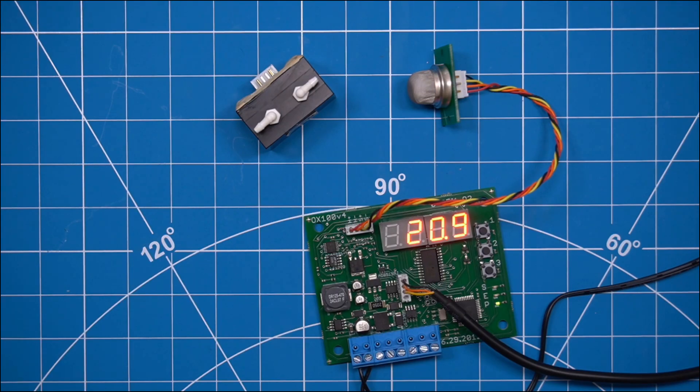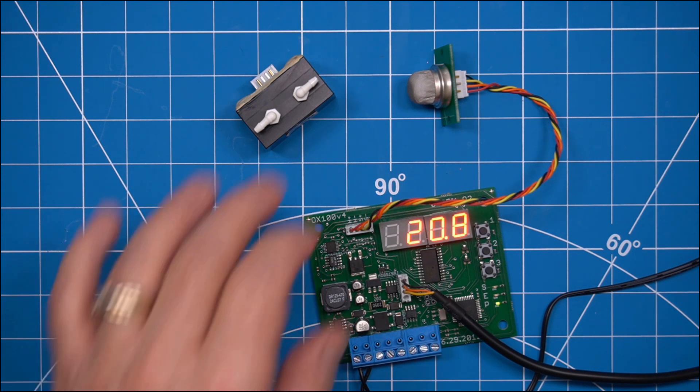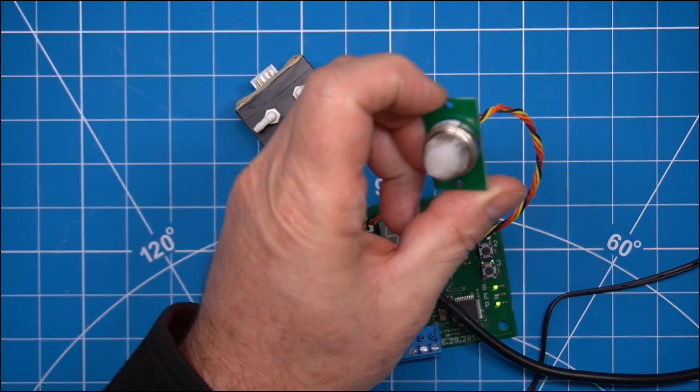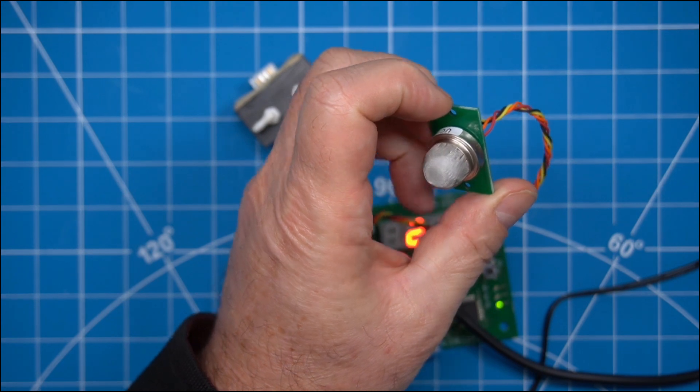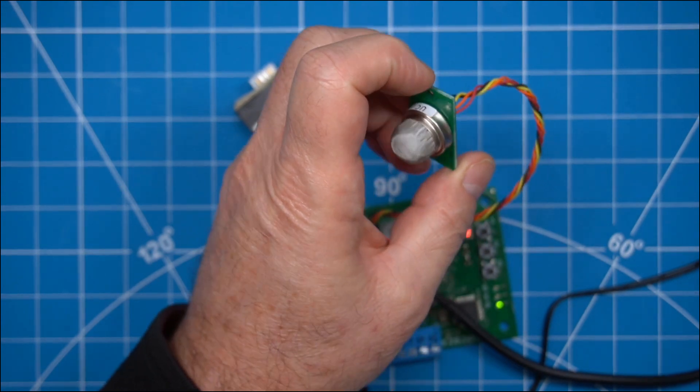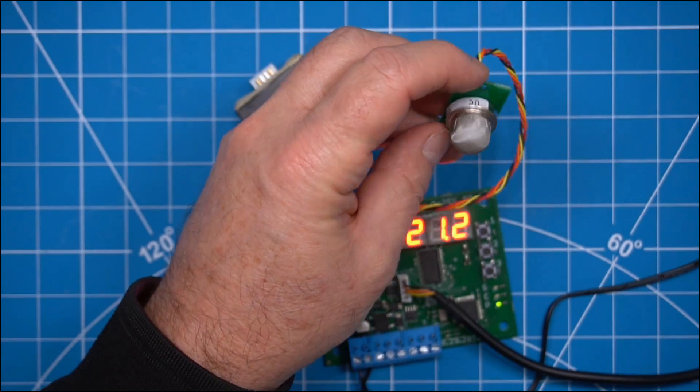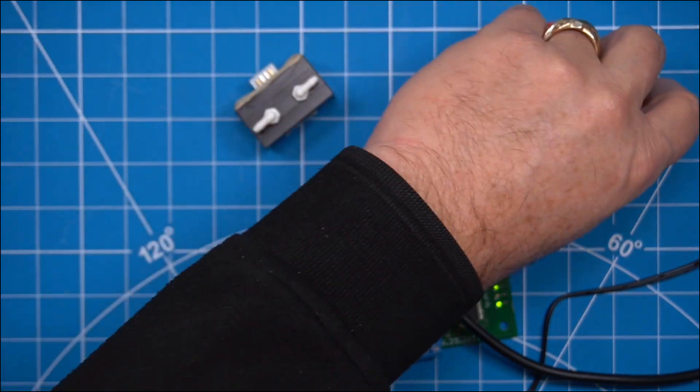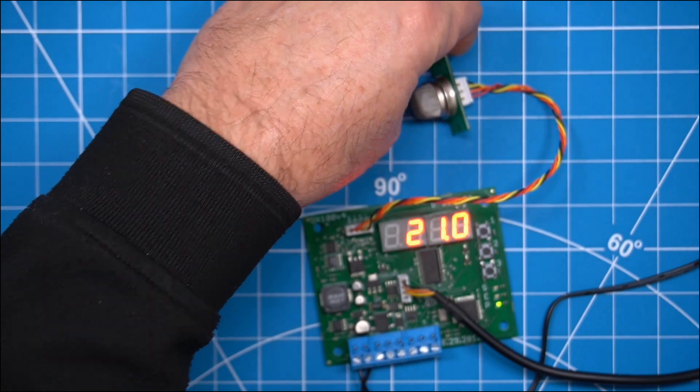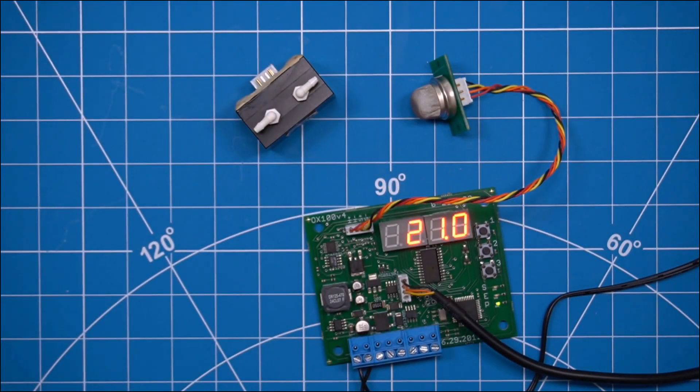This is the TR250Z Zirconia oxygen sensor. It uses the Fikara device. It is like all Zirconia sensors. It has a heater and a sensing element and it actually operates at a lower temperature than most zirconias.